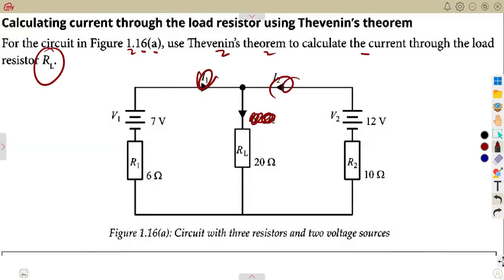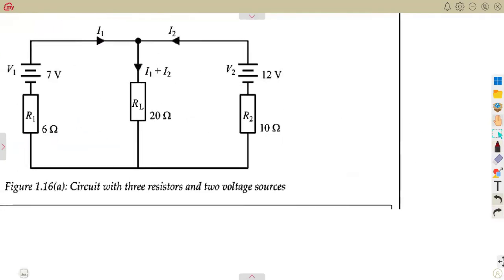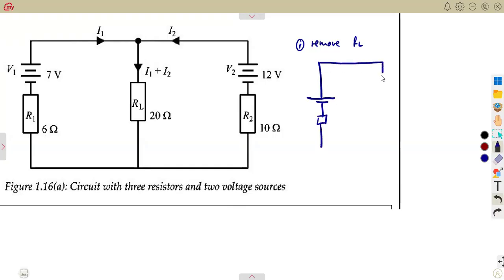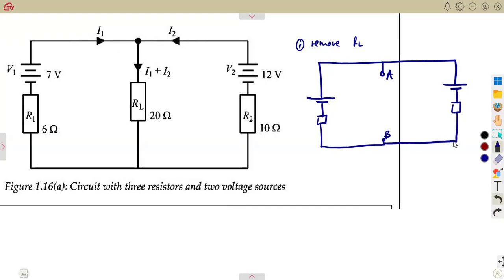What we need is to have this current. Remember the steps — what we need is to remove that resistor across it, and replace with terminals A and B. So let us remove RL. The moment you remove your RL, you are going to have those points named A and B. There is a voltage and a resistor remaining here. So this is our V1, 7 volts, and this is our R1, which is 6 ohms.